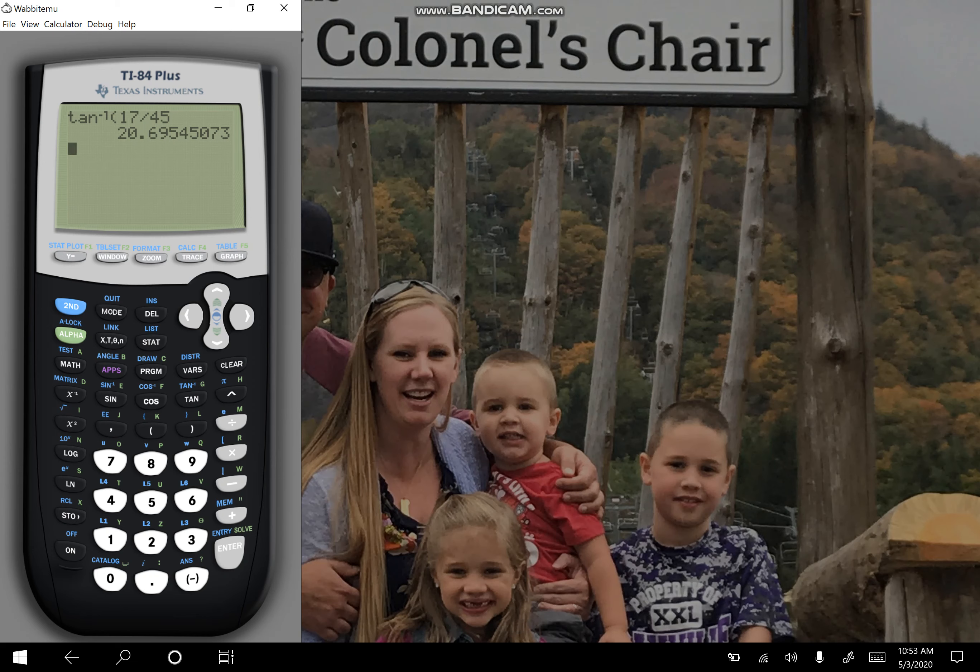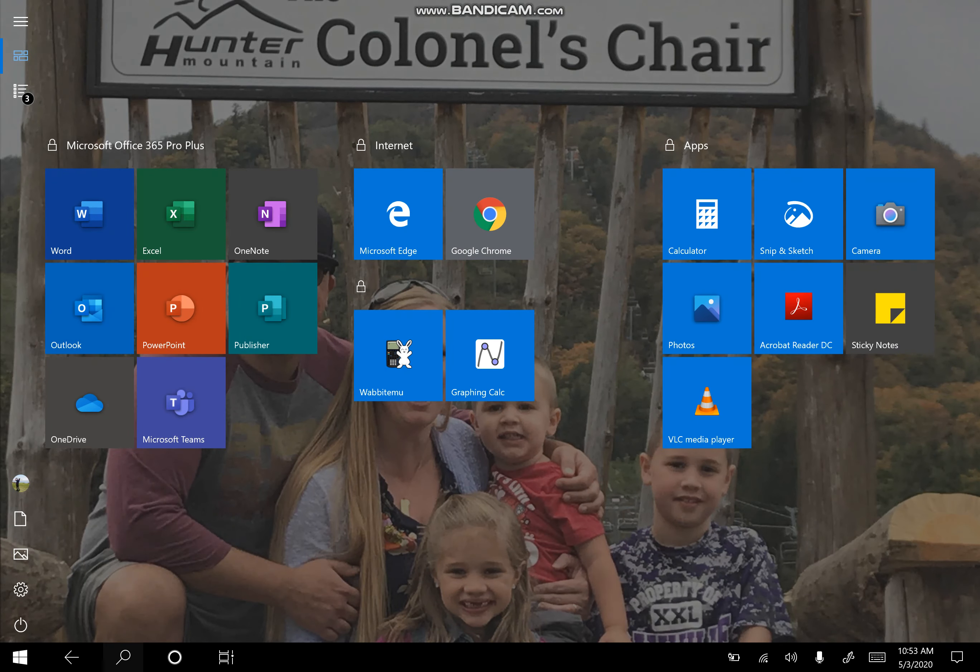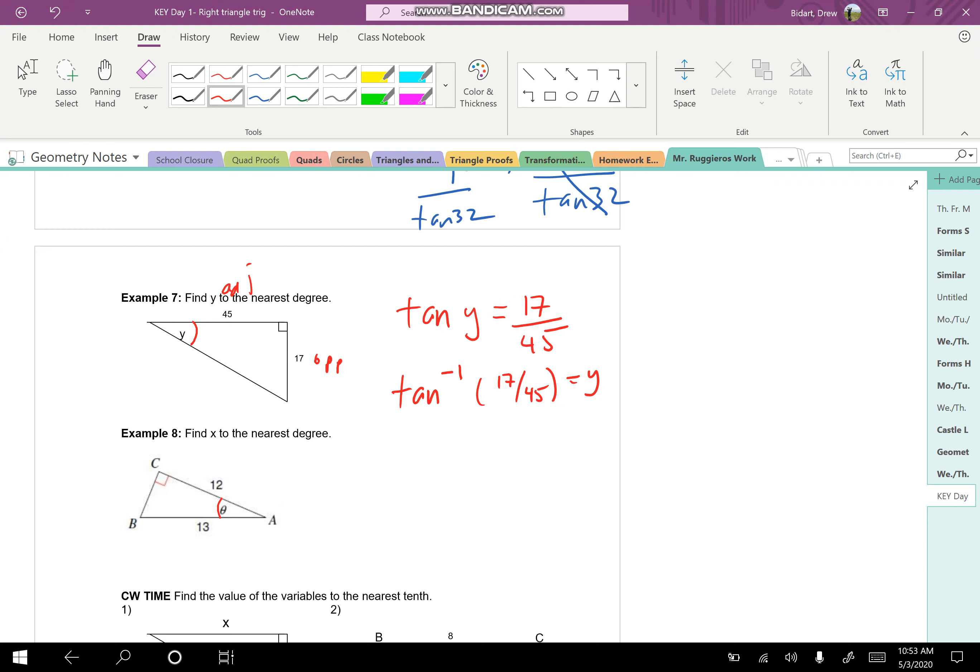Let me show you how this works. So the inverse of tan will be completed by pressing the second button. See if I press second tan. What this allows us to do, and I'm just going to type in 17 divided by 45. This allows us to find the angle.